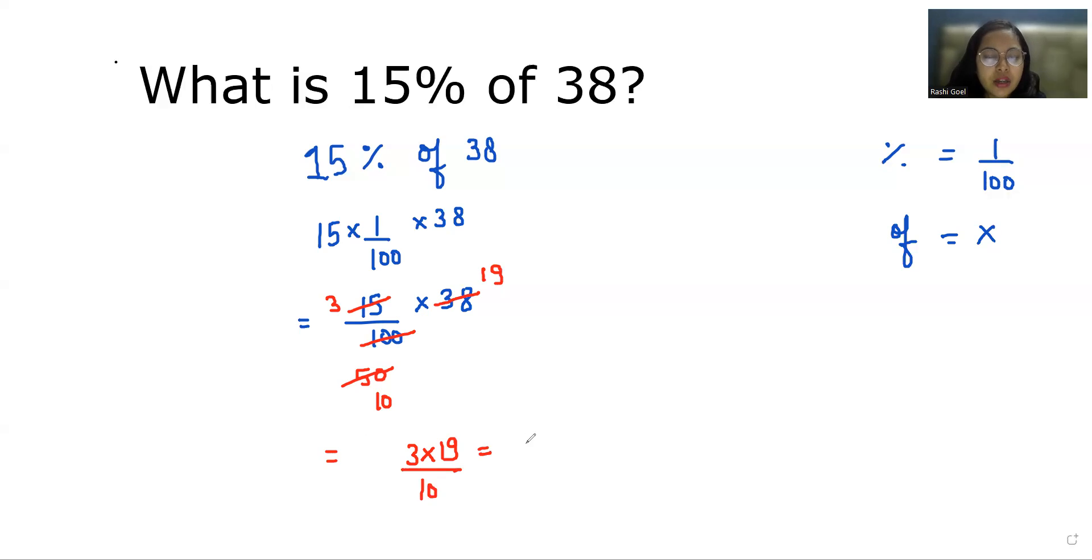So 3 times 19 is 57 by 10. Now we are going to put the decimal depending upon the number of zeros in the denominator. There is one zero, so we'll put one decimal before the digit, that is 7. So our 15% of 38 is 5.7. I hope it's clear.